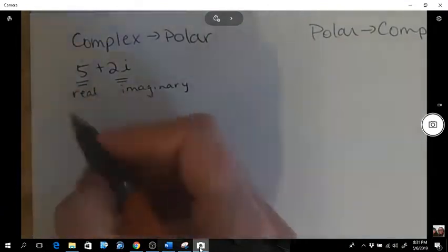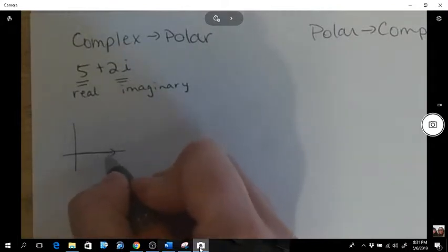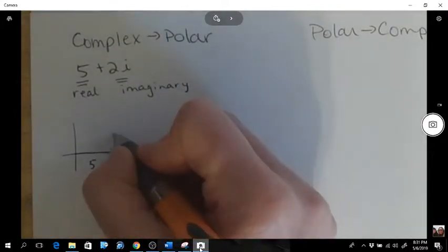So when we graph this, it would go 5 right, 2 up.